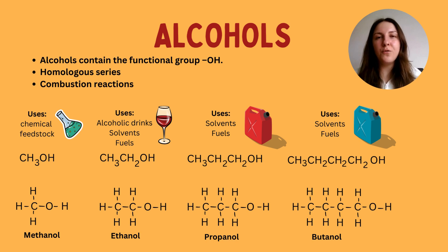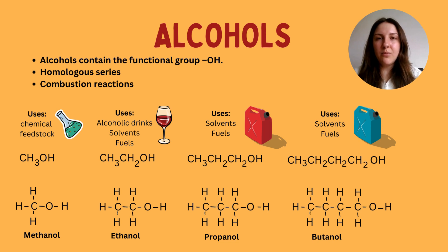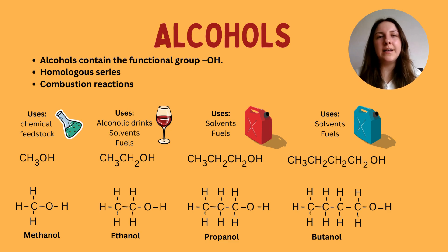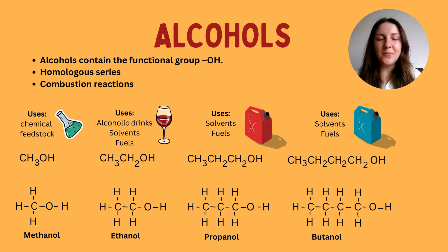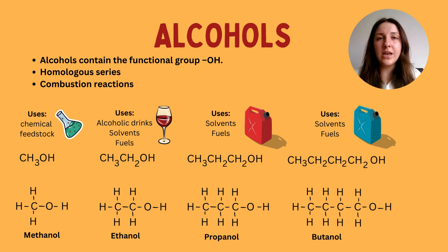Those are the first four alcohols you need to be aware of — you need to know the names and identify them in their structural formulas. Just like with alkanes and alkenes, the prefix indicates how many carbons there are: methanol has one carbon, ethanol has two, propanol has three, butanol has four. You also need to be aware of the functional group and be able to identify alcohols from other substances like alkenes, which have a carbon-carbon double bond.